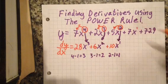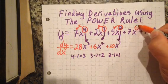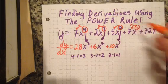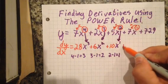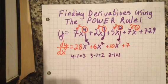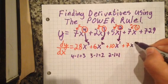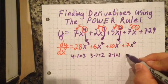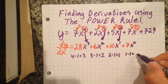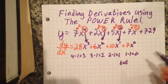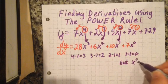Now there's a hidden 1 up there above that x, so using the power rule, 1 times 7, and that's going to give me 7x to what power though? To 0, because 1 minus 1 is 0. Now x to 0 equals 1.